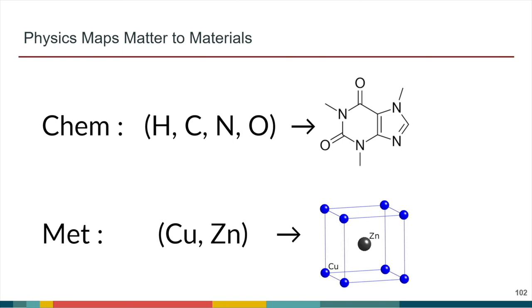You can think of chemistry as some sort of overall large mapping function — an n-fold Cartesian product of the matter. We take some tuple of that and out comes the molecules, or for metallurgy, we're able to take copper and zinc and make different types of metals and alloys. Bonus points to anyone who can tell me which molecule this is — it's caffeine. And extra bonus points if anyone knows what metal this is — it's brass.